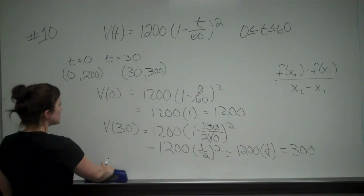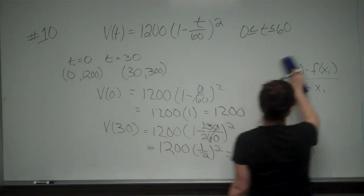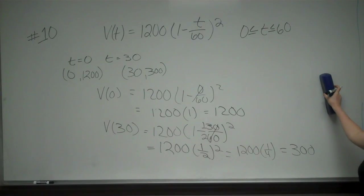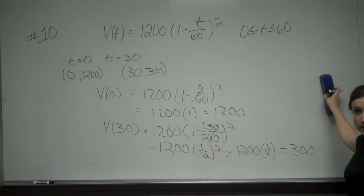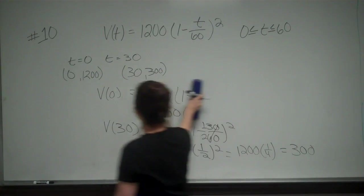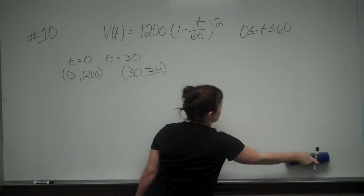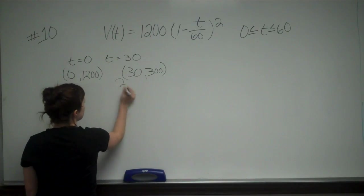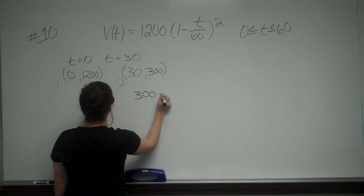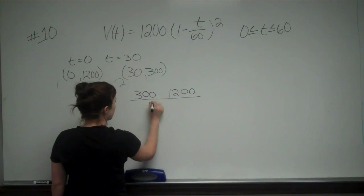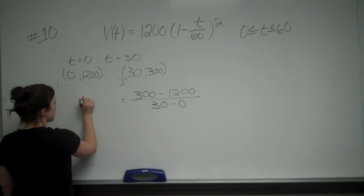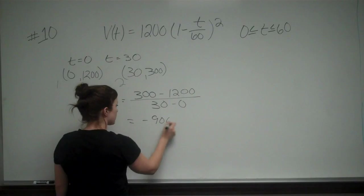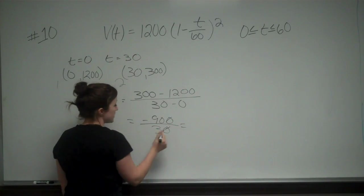Now that I have both points, I'll put them into the average rate of change formula: Y₂ minus Y₁ over X₂ minus X₁. Using (0, 1200) as point 1 and (30, 300) as point 2, that gives me 300 minus 1200 over 30 minus 0, which equals negative 900 over 30, which simplifies to negative 30.